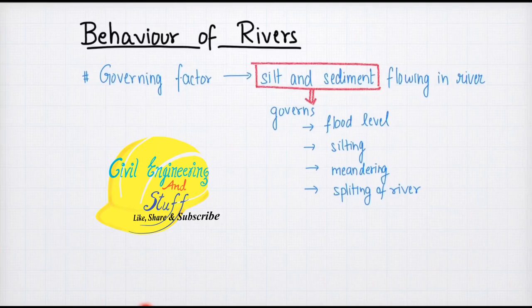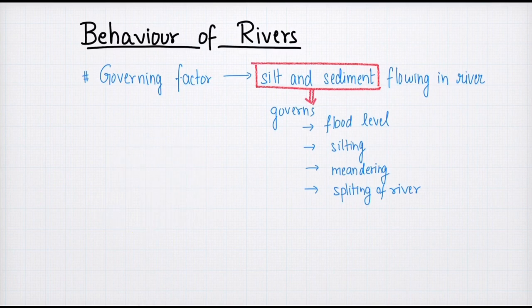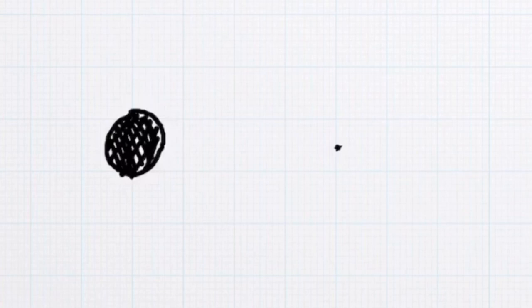The behavior of the river is basically governed by the silt and sediment flowing in that river. This can be understood through an example: suppose we have a river in which the flowing water carries coarser particles, and another river in which the flowing water carries very fine particles. The river carrying coarser particles will not be able to transport water to a further distance compared to the river carrying finer particles.